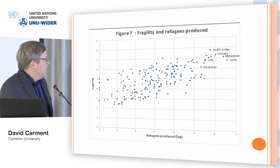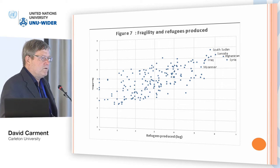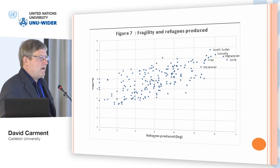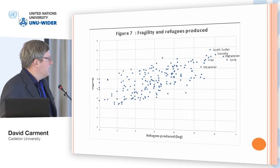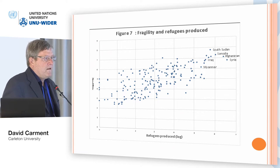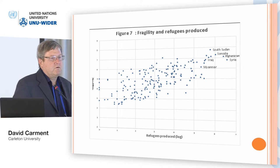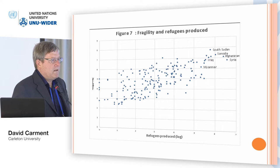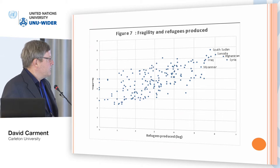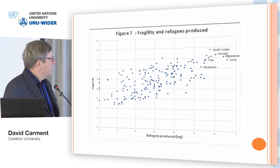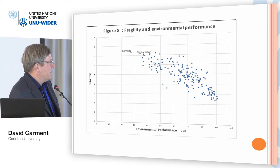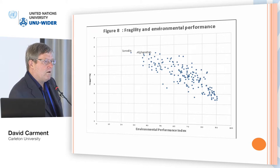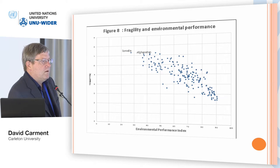Moving to some key findings related to refugees: some fragile states produce more refugees than others, but the overall trend line suggests that increasing fragility is associated with increasing refugees produced. We also evaluated intake or hosted refugees — not as strong a relationship by simple correlation, but an indicative relationship exists. This suggests fragile states are burdened both through the departure of refugees and through hosting them. Environmental performance shows a somewhat weaker but still evident relationship — fragile states perform less well on environmental measures including drought and access to arable land.